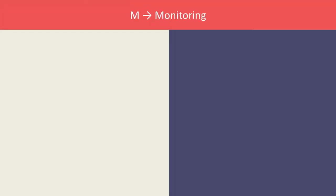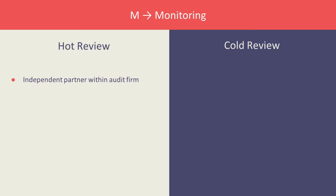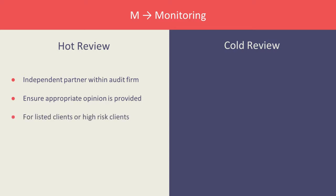The M is for monitoring. Strong policies and procedures should be in place; however, to ensure these are followed, there must be an element of review from the audit firm. The standard recommends two types of monitoring: a hot and cold review. An independent partner within the audit firm usually undertakes the hot review. They review the audit work and conclusions reached to ensure that the overall conclusion — i.e., the opinion — is appropriate. Hot reviews are usually carried out for listed clients or those with significant audit risks, and are carried out before the audit report is signed.